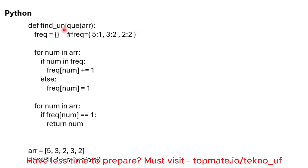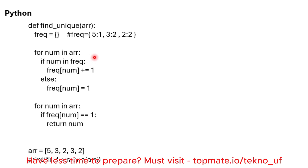Based on the frequency dictionary {5:1, 3:2, 2:2}, we find the unique element. For num in arr — we traverse again. If frequency[num] == 1: in the first check, num is five and frequency[5] is one, so the condition is true and we return five. We have got the output successfully. You can test with other inputs and run the program to better understand. First practice on pen and paper, then solve in your preferred language.